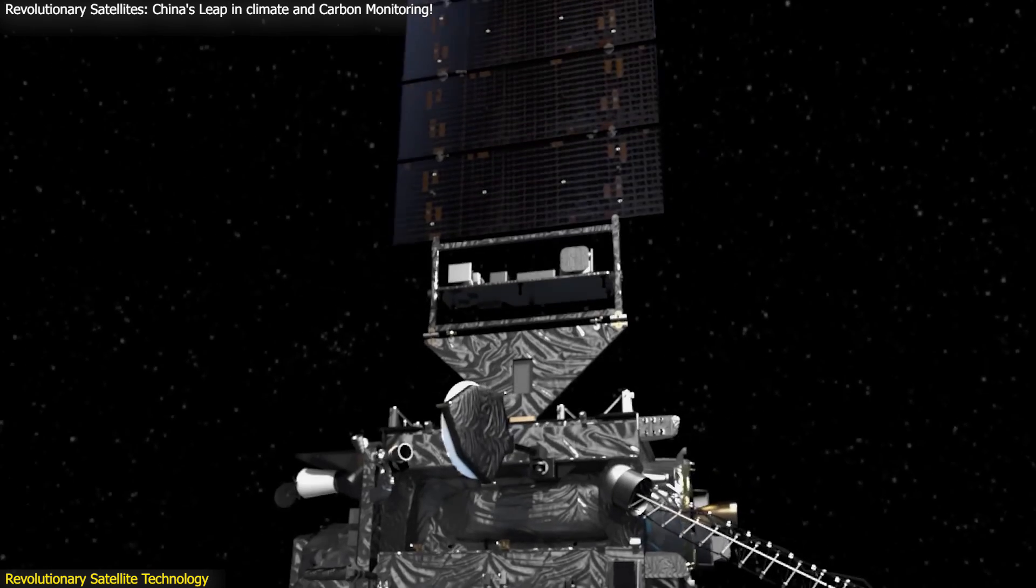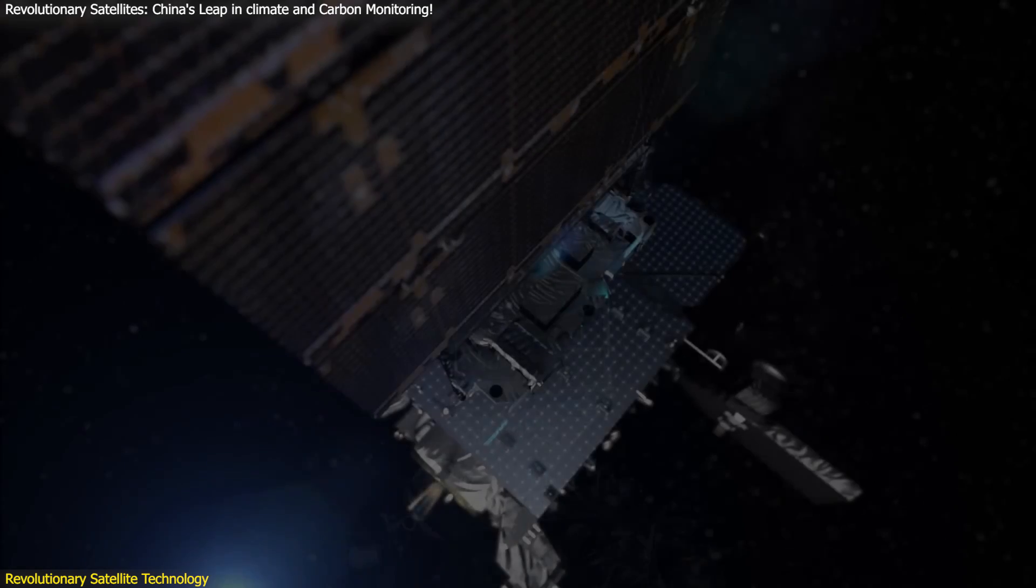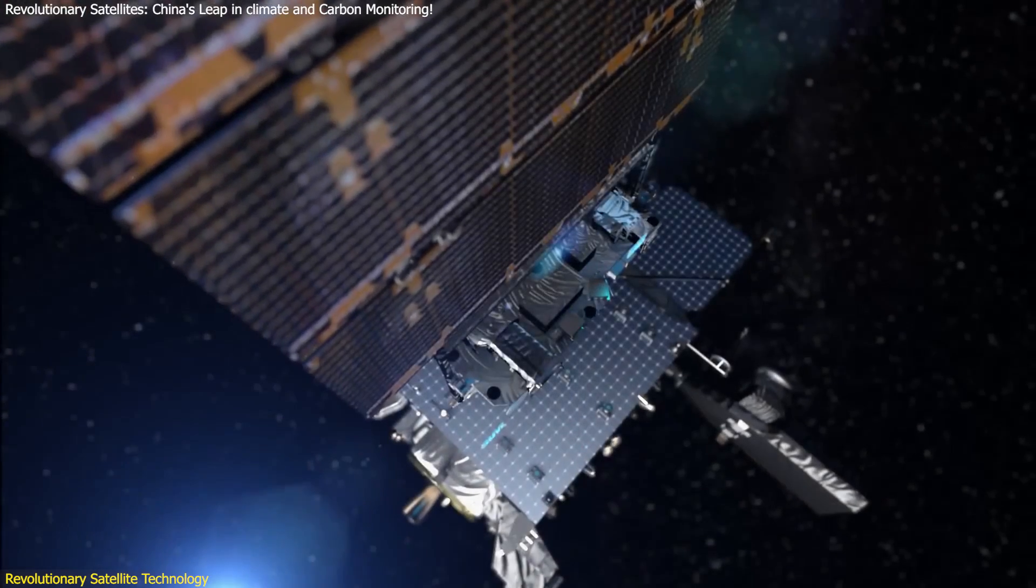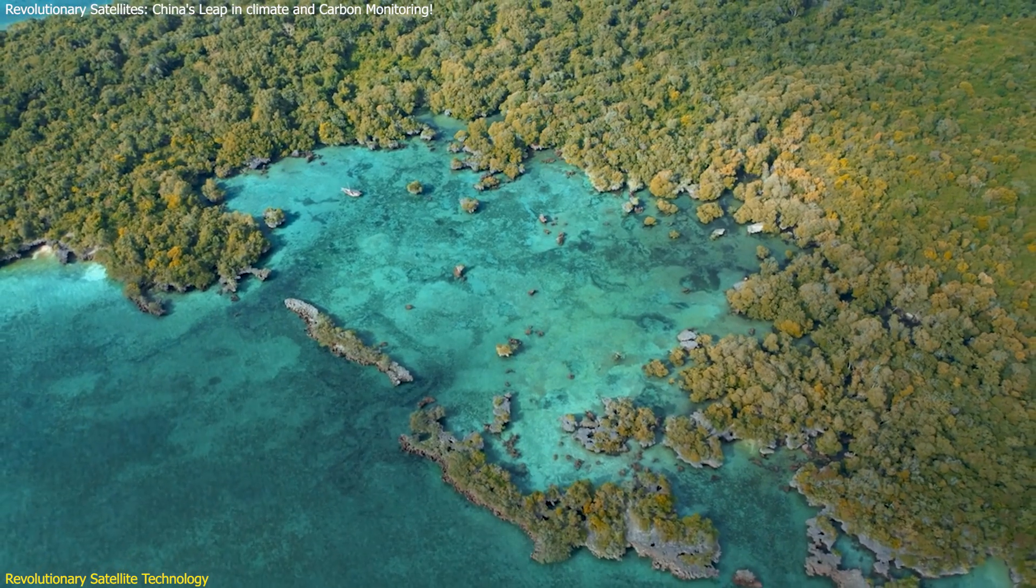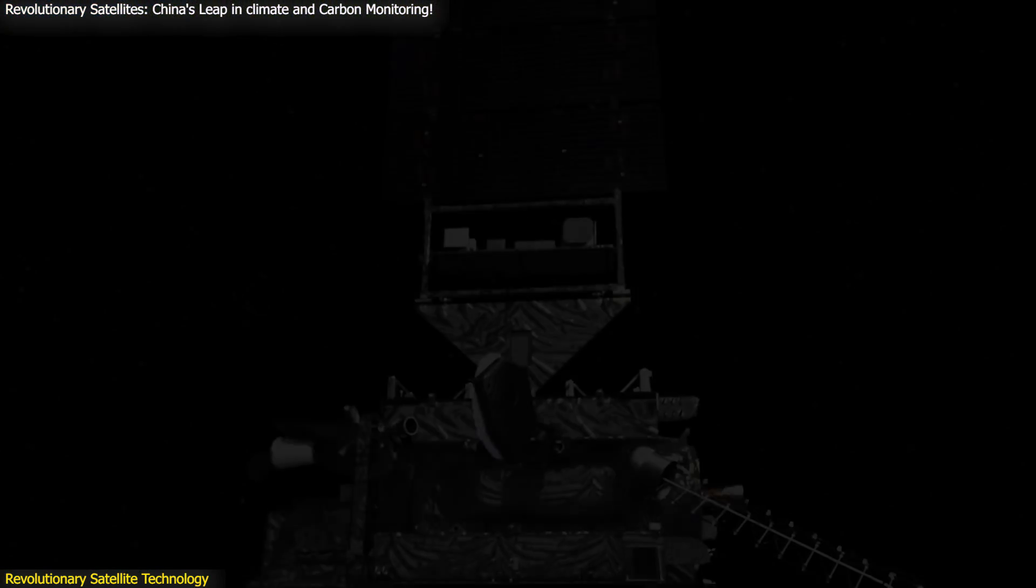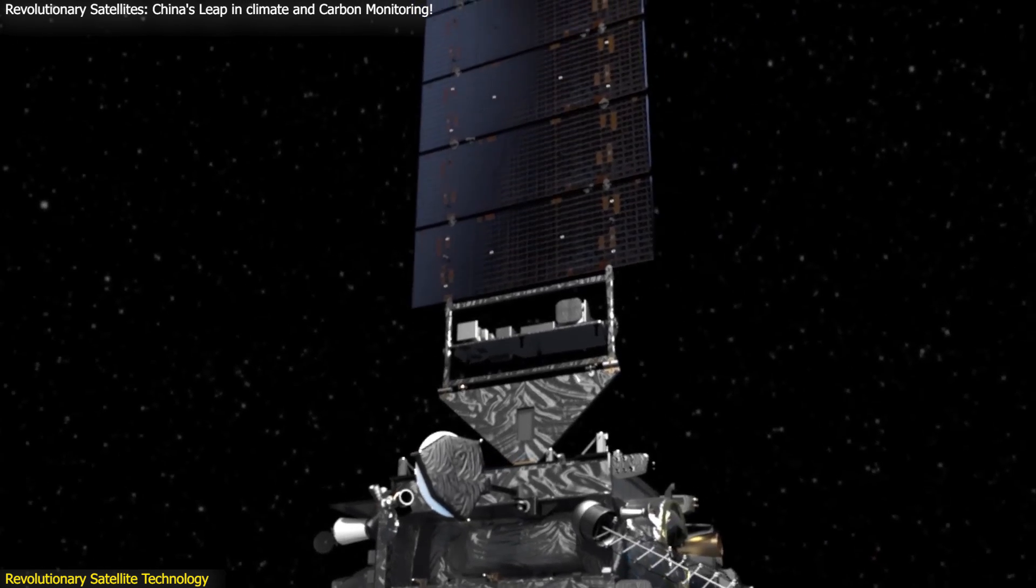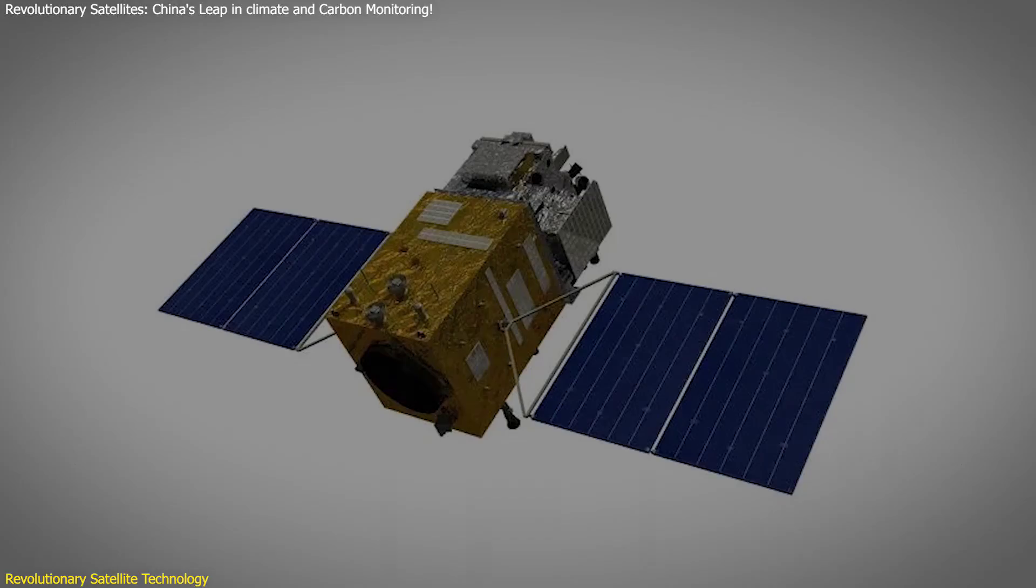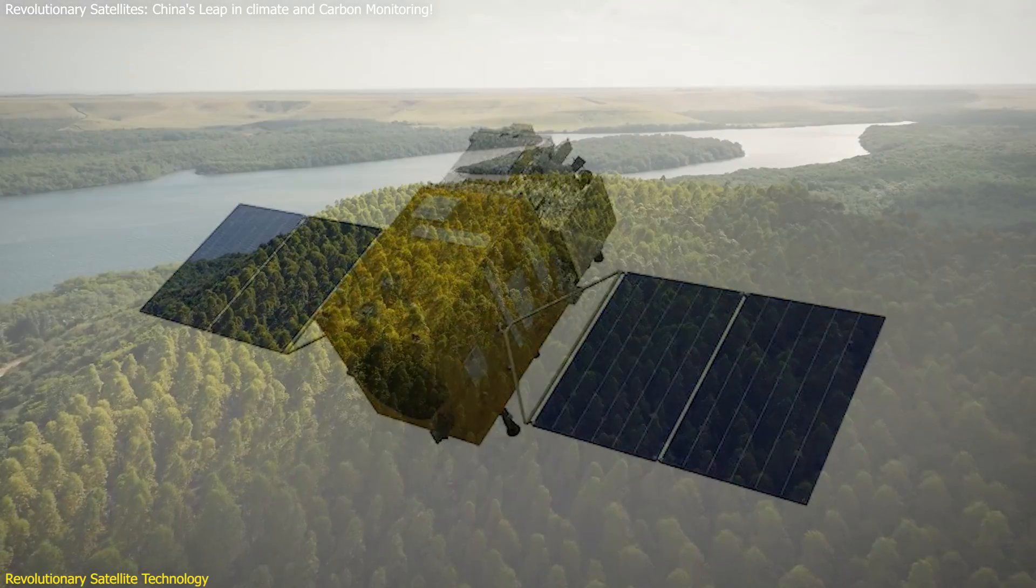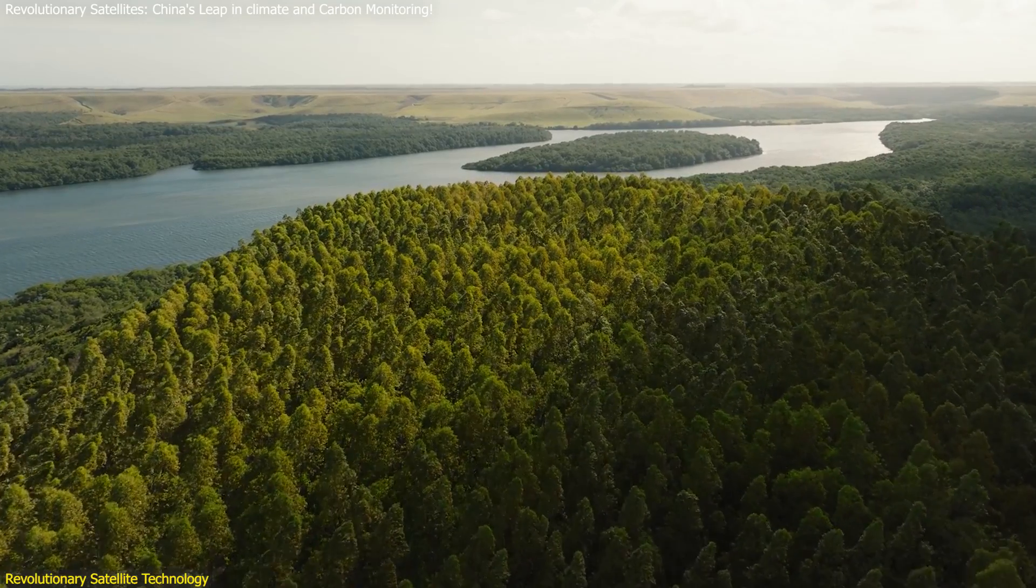These satellites have demonstrated significant applications in various fields during their in-orbit testing. They showed favorable results in ecological environment monitoring, forestry and grassland management, and geographic surveying. The Atmospheric Monitoring Satellite helps track pollutants and greenhouse gases, aiding in environmental protection and regulatory compliance. Meanwhile, Gumong provides data on forest health and biomass, which is essential for managing forests sustainably and combating deforestation.